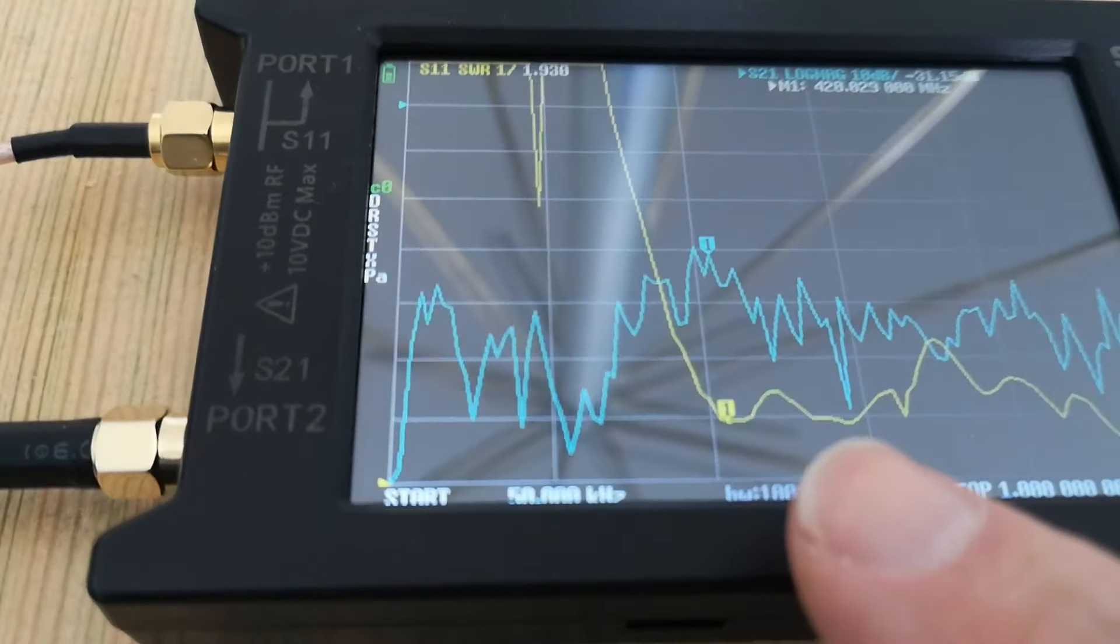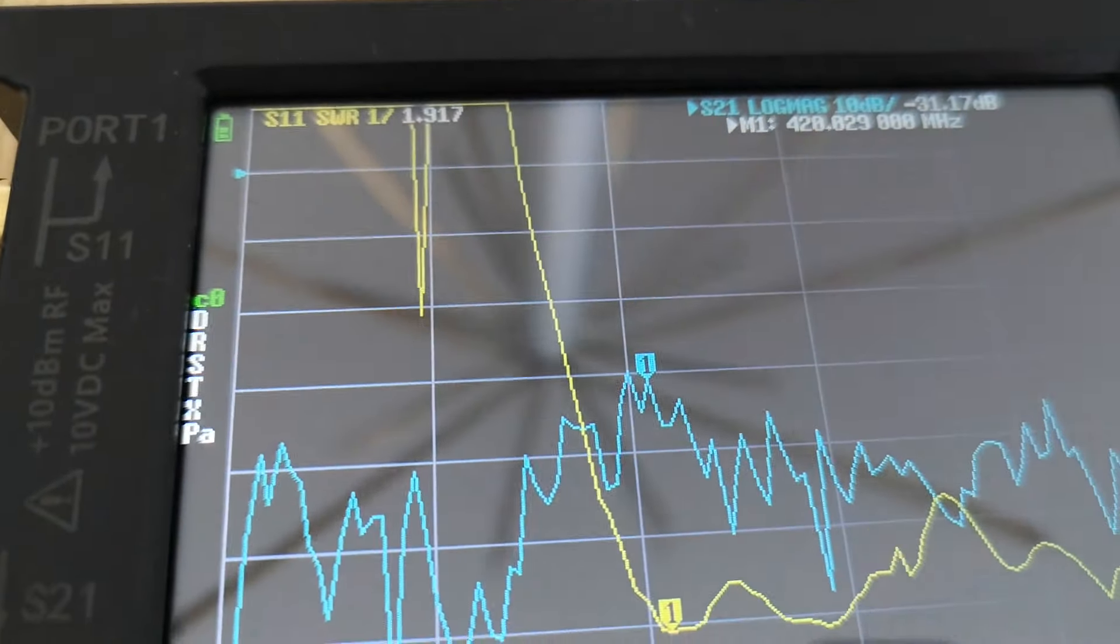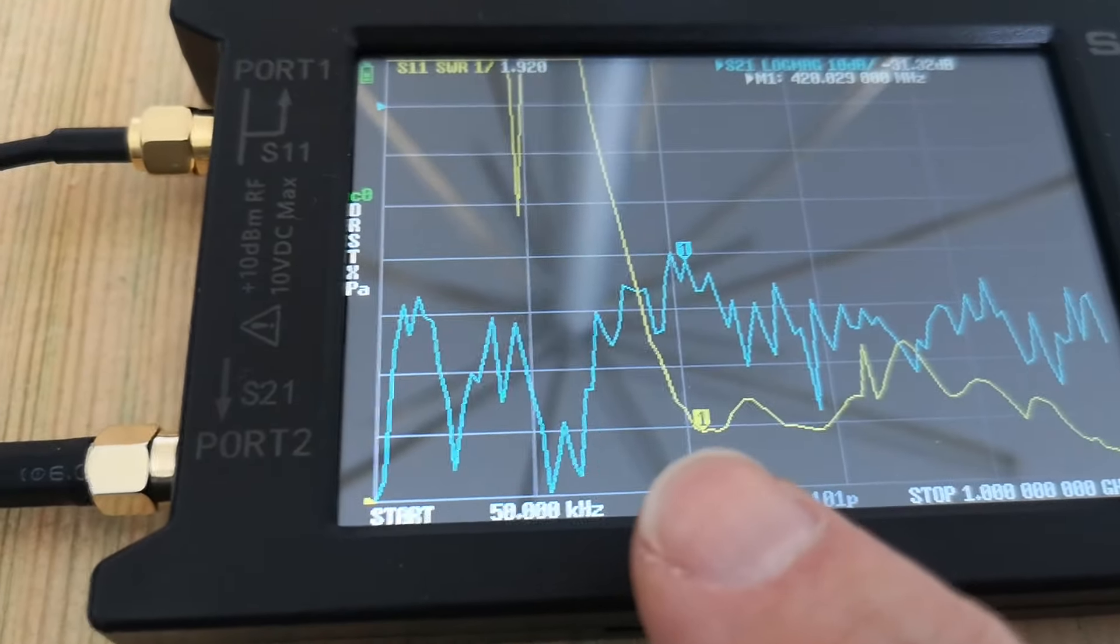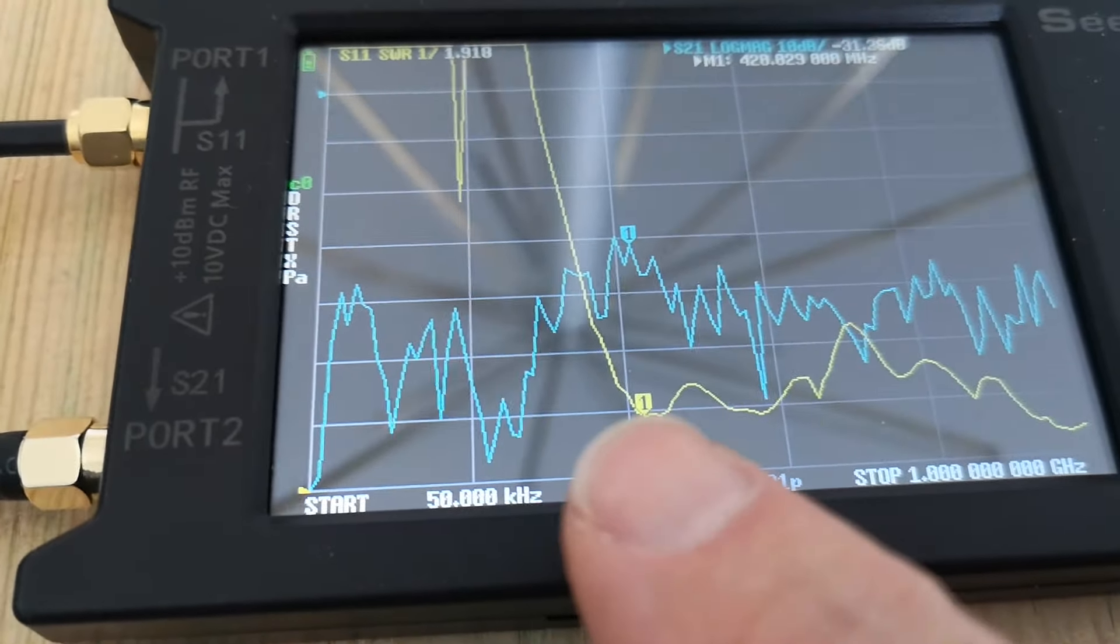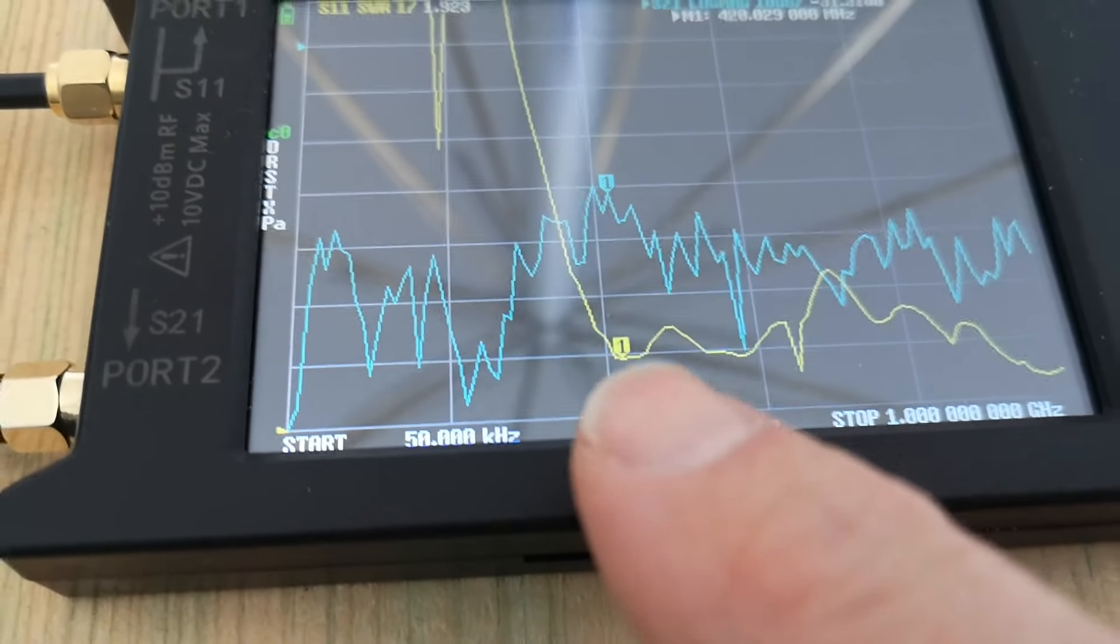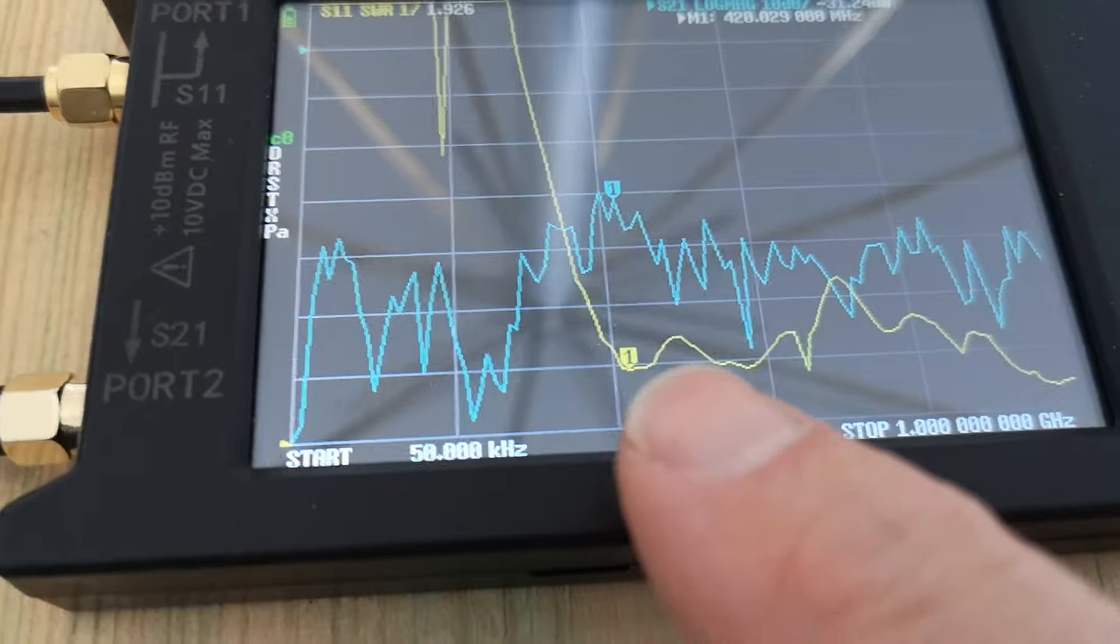And you can see that's where the SWR curve, the yellow curve, suddenly comes down to a reasonable value. That's two, an SWR of two. At 420 megahertz, which is fine because I want to use it at 433. And then it goes up.